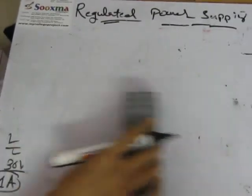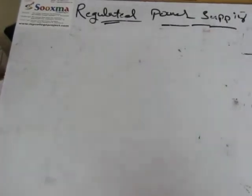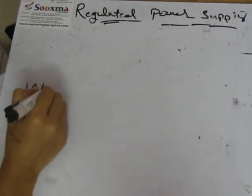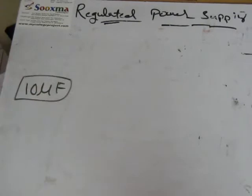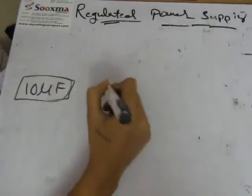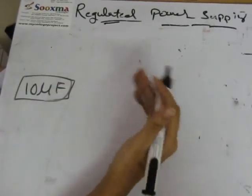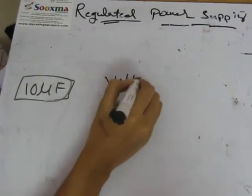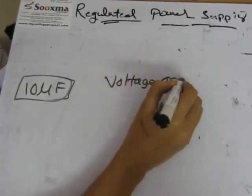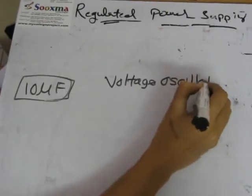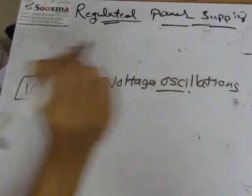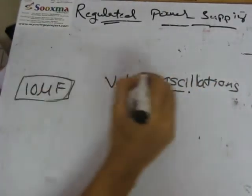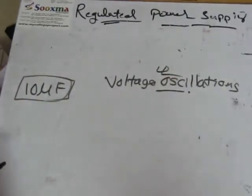After voltage regulation we should place another small capacitor of 10 microfarad. This is because before giving supply to the voltage regulator there will be voltage oscillations present in that input voltage. We should filter out this oscillation, and that is why we are using this 10 microfarad capacitor.